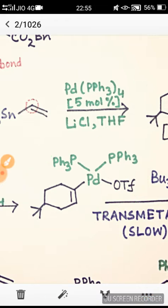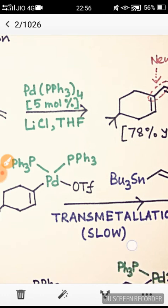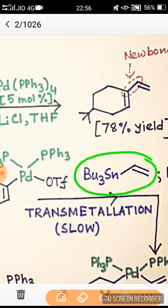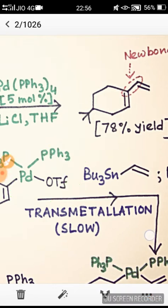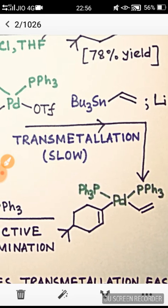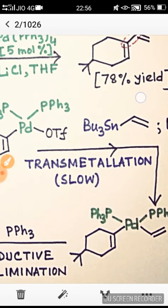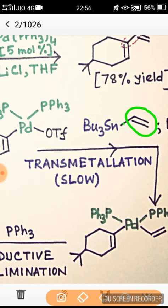Now is the turn of transmetallation, which is the rate-determining step of this coupling reaction. In the transmetallation step, the organotin compound transmetallates with the palladium compound. This compound is transferred where the nucleophilic vinyl moiety is transferred to the palladium group.